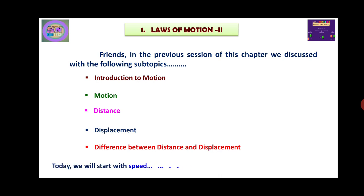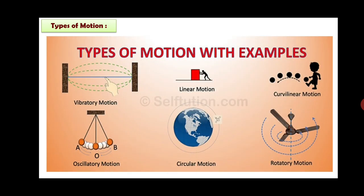Today we will discuss Speed. Before going to discuss Speed, let us see the types of motion. You can see different types of motion in our day-to-day life, among a few here: Vibratory Motion, Linear Motion, Curvilinear Motion, Oscillatory Motion, Circular Motion, and Rotatory Motion. Not only these, you could see additional types of motion in reference books.